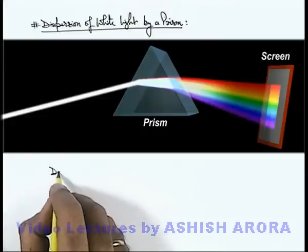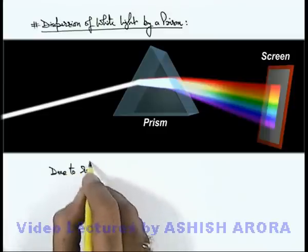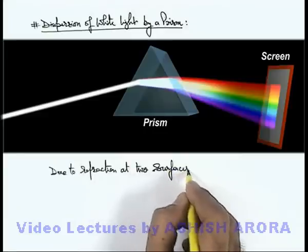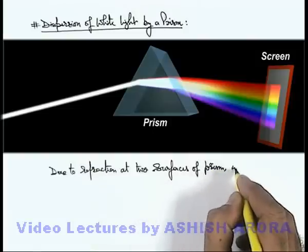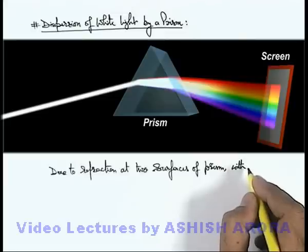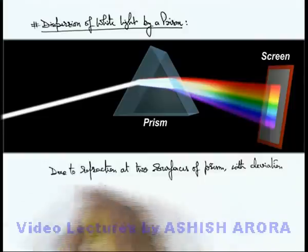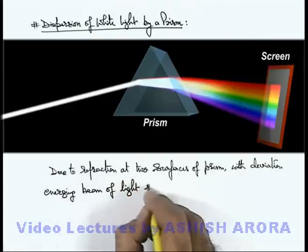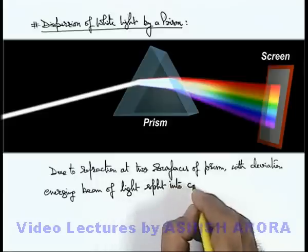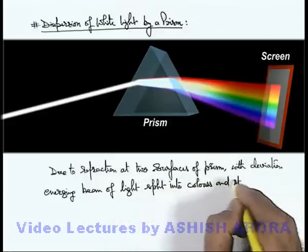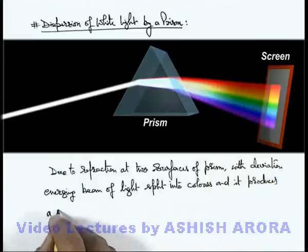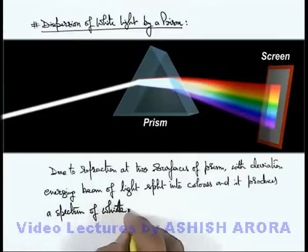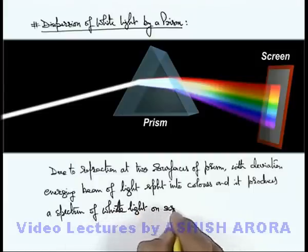And here we can see — we can write that in this situation, due to refraction at 2 surfaces of the prism, the emerging beam of light, with deviation, splits into colors and it produces a spectrum of white light on screen as shown.